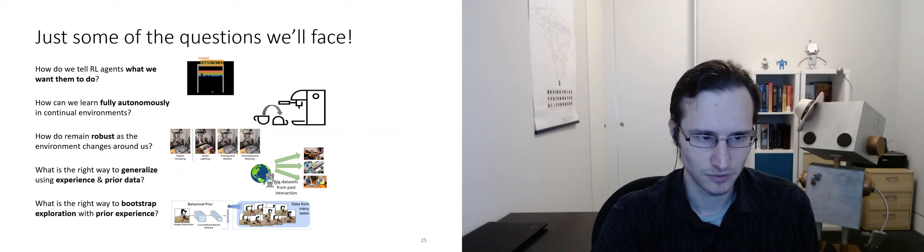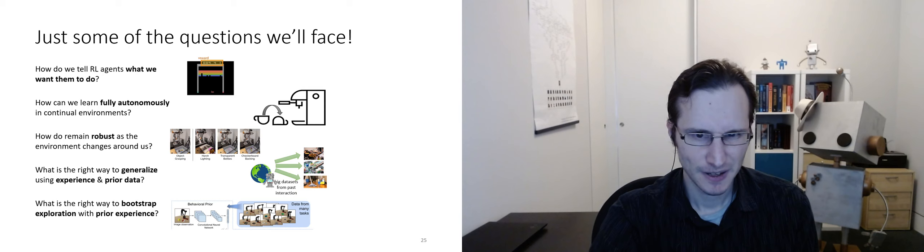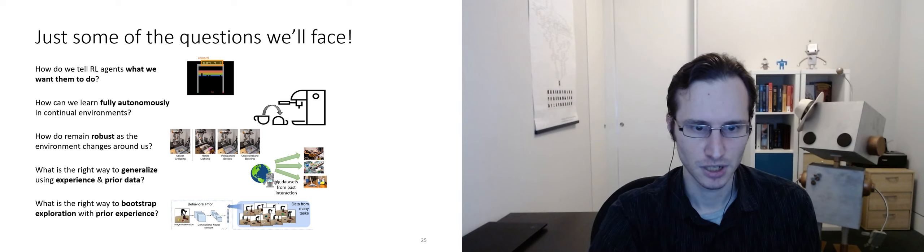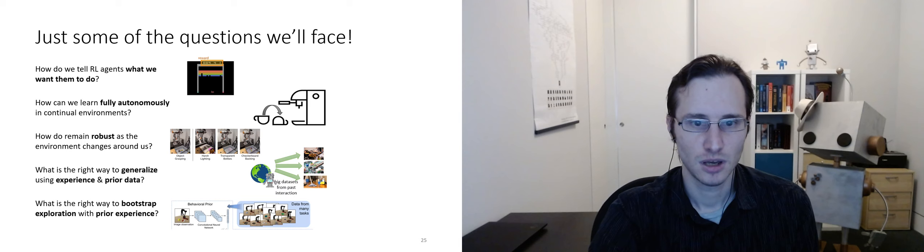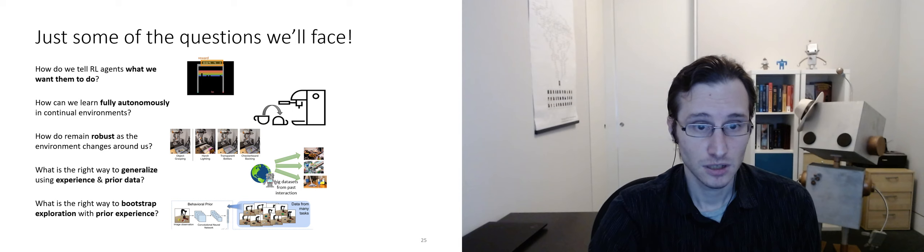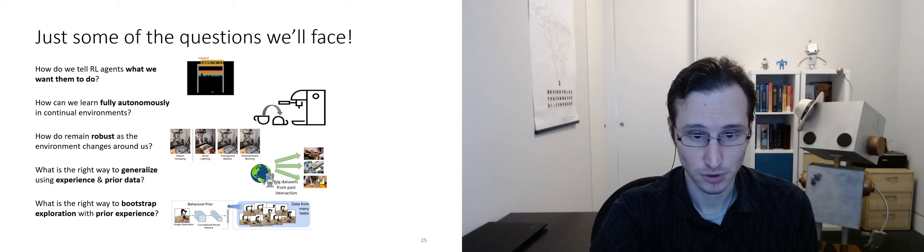So, I talked about these questions. How do we tell RL agents what we want them to do? How can we learn fully autonomously in continual environments? How do we remain robust as the environment changes around us? And what is the right way to generalize using experience and prior data and the right way to bootstrap exploration with prior experience? These are not the only questions that we're faced with when we have to get RL to work in the real world. But remember what I said before. It's not about optimal control. It's about good enough control. It's about survival. It's about adapting to an unfamiliar setting quickly enough to be useful. These are not questions that can be answered by transferring from simulation. These are questions that pertain to the real universe, the hard universe. These are naturalistic questions. I think that this presents challenges, but it also presents an enormous opportunity.